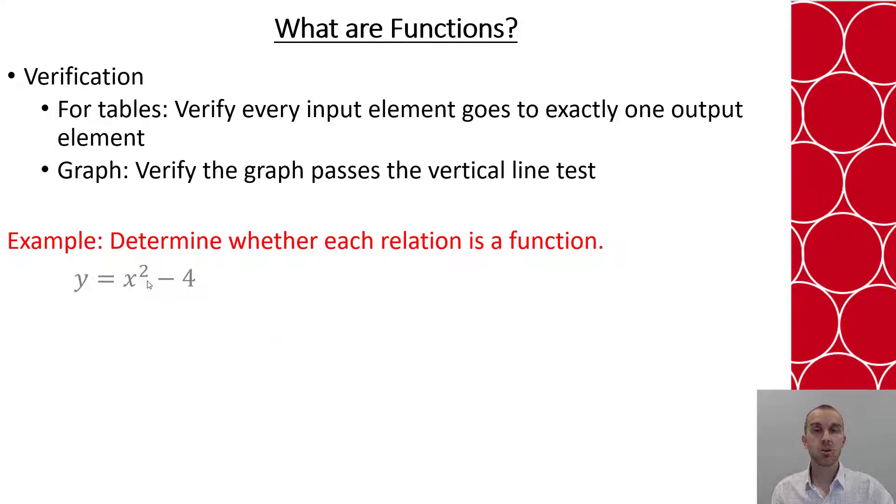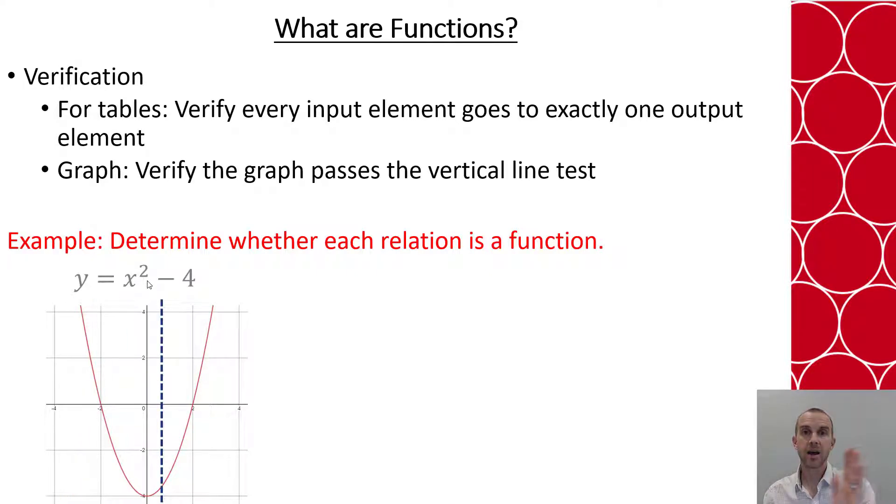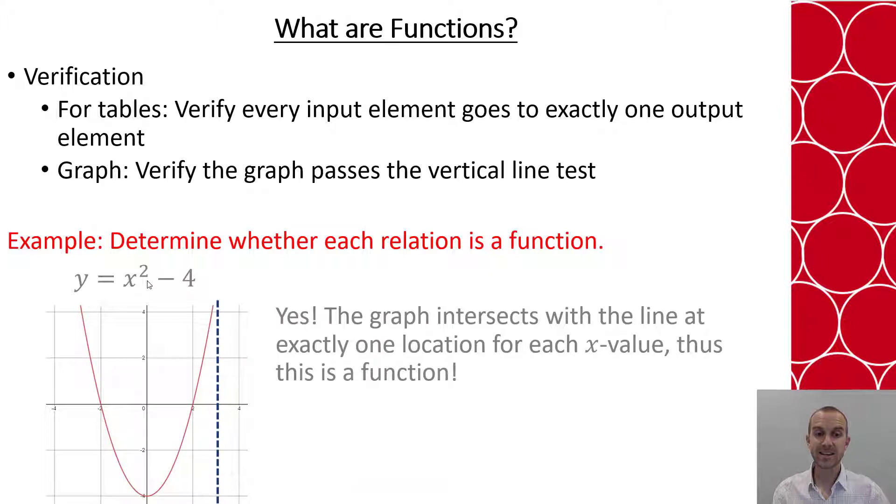Now say we want to graph y = x² - 4. Easiest thing to do, graph it, and then we're going to take our vertical line test and see does it intersect the line at exactly one location across the entire graph. So I run that line across and I say yes it does, therefore this is a function.